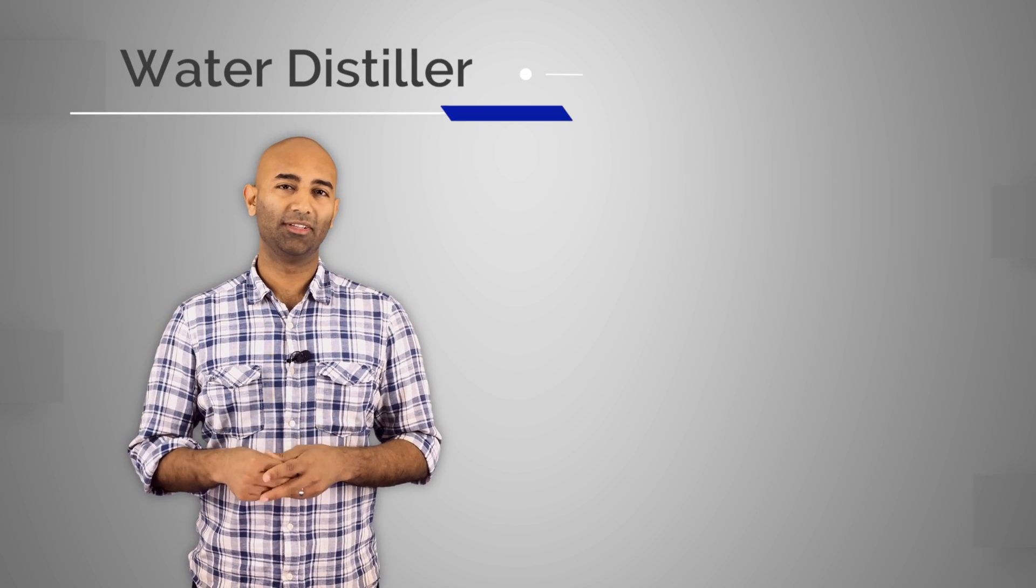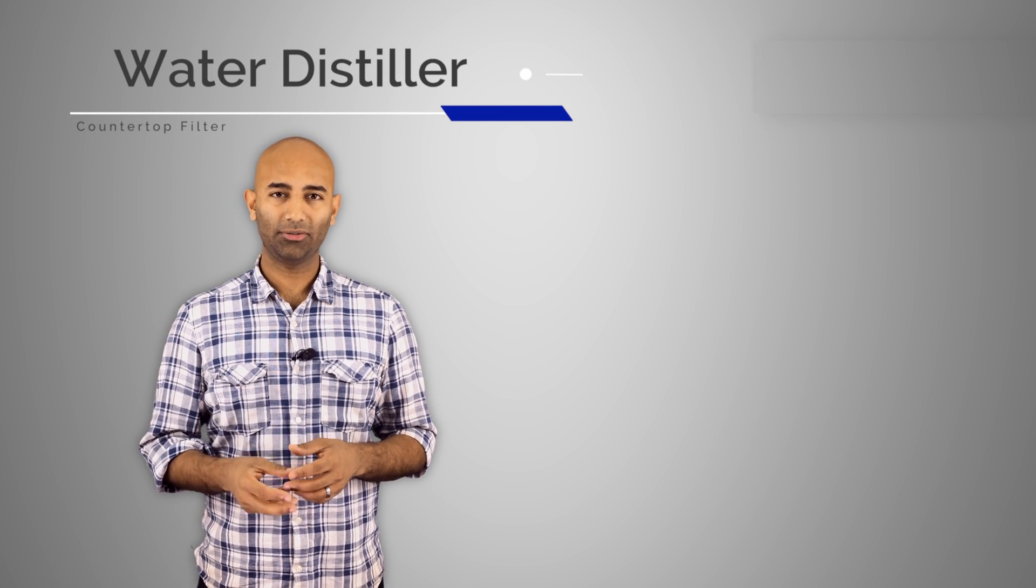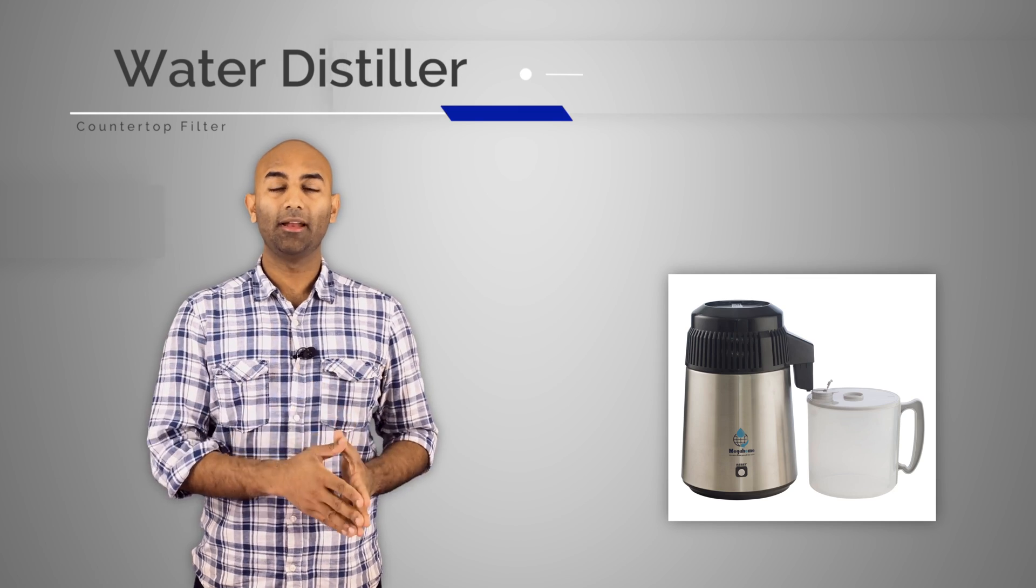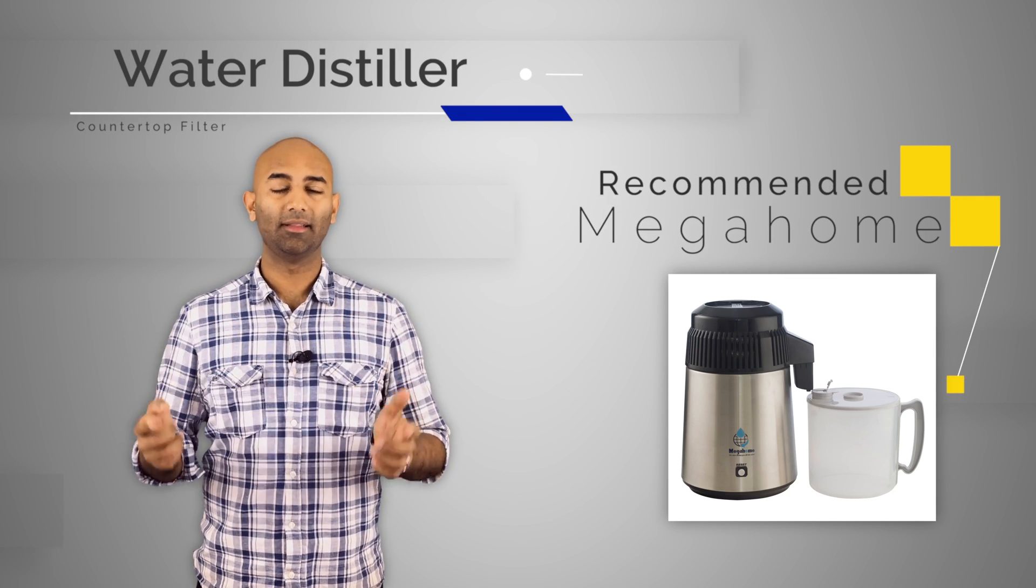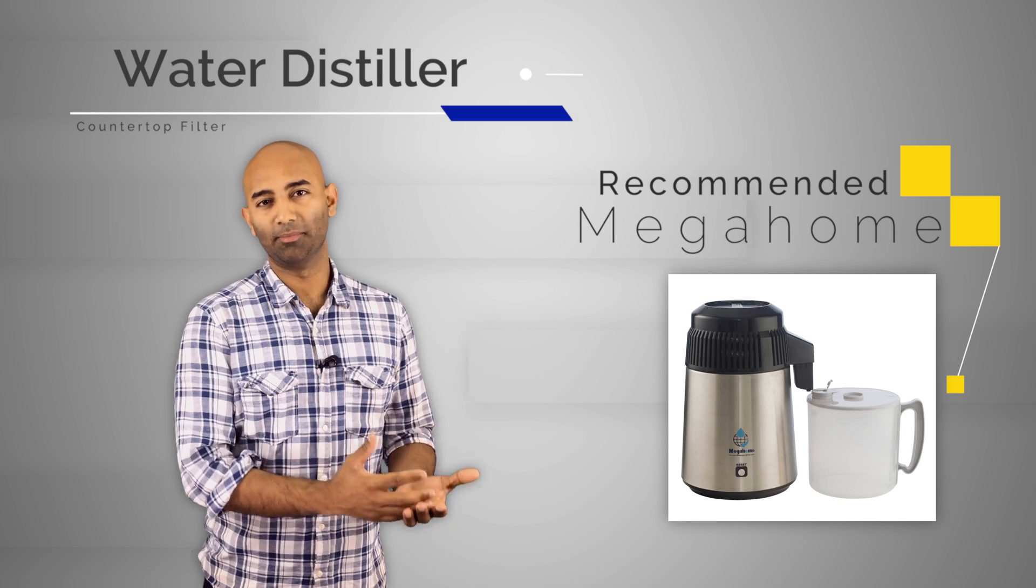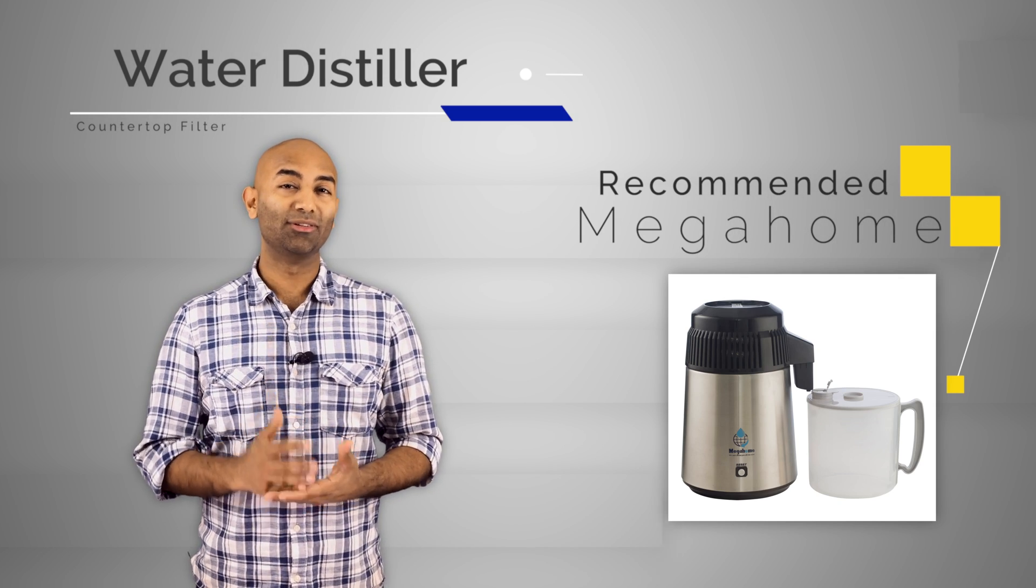The second type of countertop filter is a water distiller and these are electrical, they got to be plugged in. The water gets heated up and evaporated and that evaporated water is collected. The idea is all the bad stuff stays behind and it's true, they actually do work really well.